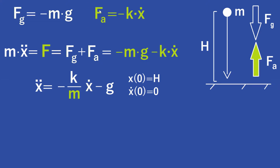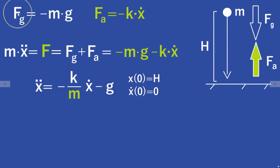We should also check the sign of the air drag — it should be positive because it is pointed upwards. Since the velocity is pointed downwards, it is negative, and because we have a minus sign, the air drag is indeed positive. Using Newton's second law we can sum these two forces: the gravitational force and the air drag. We get m times the second derivative of x equals minus m times g (the gravitation) minus k times the first derivative of x (the air drag).